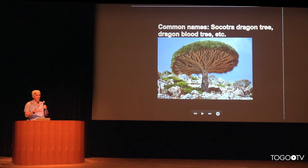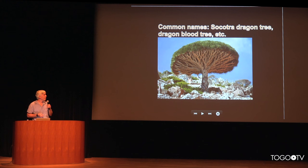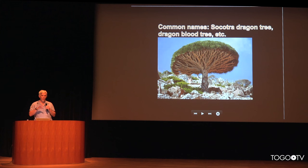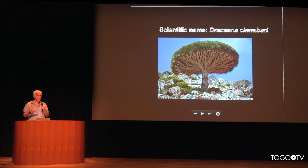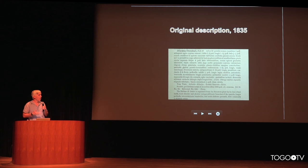This interesting tree is found in the Socotra archipelago just off the coast of Yemen. It's commonly known as the Socotra dragon tree, also the dragon blood tree. It produces a really red resin used locally for all sorts of ailments. There are a number of common names applied to this species, and it's not always clear which species a common name refers to. What you really need is a scientific name. In this case, it's been named Dracaena cinnabari. You can go and look at the original description from 1835 when it was first described.